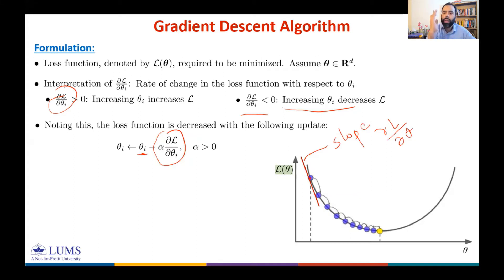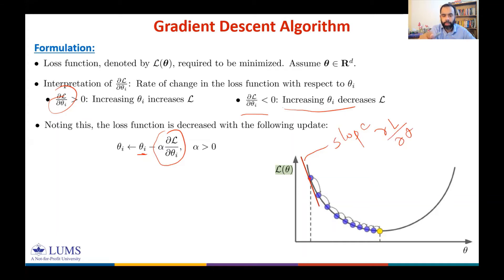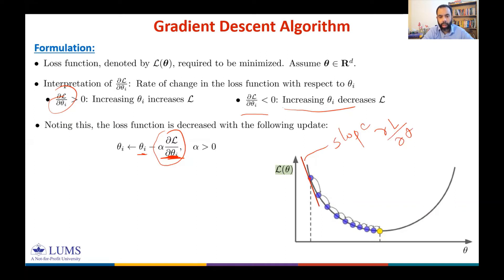The slope is negative and the optimal point is to the right, so you add something to θ. Since the partial derivative is negative, the next θ will be greater than the previous one — moving you to the right toward the minimum.